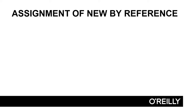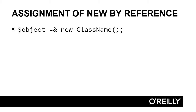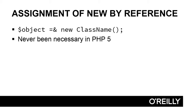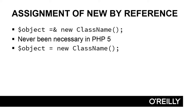Nor can you use assignment by reference with the new keyword. This is where the equals sign is followed by an ampersand when instantiating an object. It's a hangover from the PHP 4 object model. It's never been necessary in PHP 5 because objects are always created by reference.